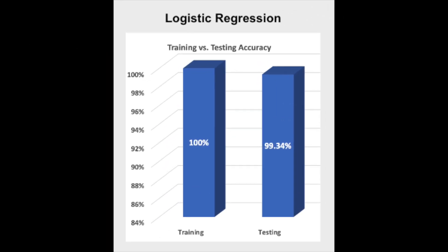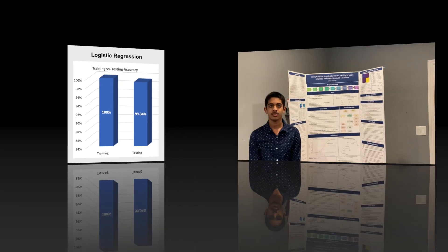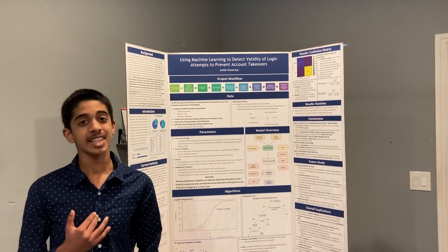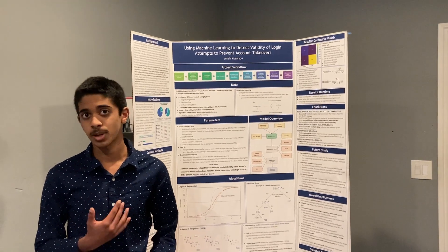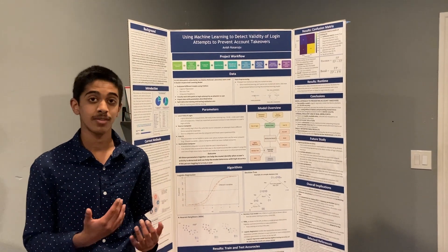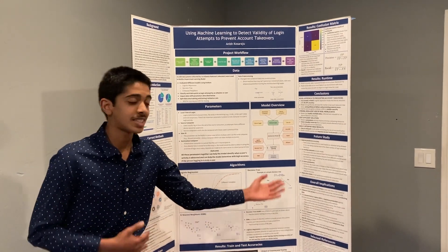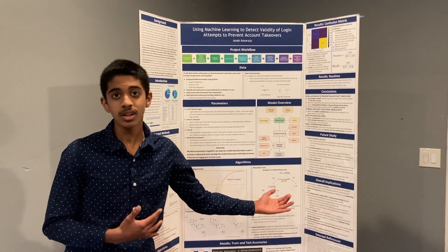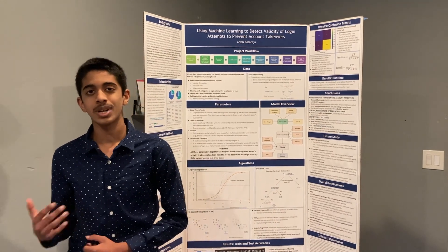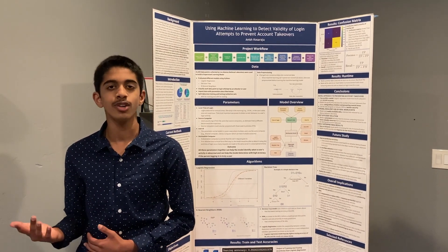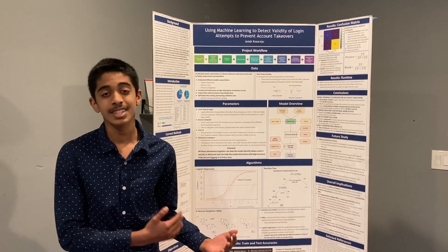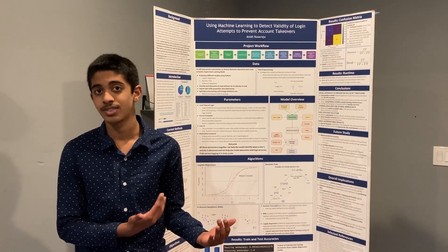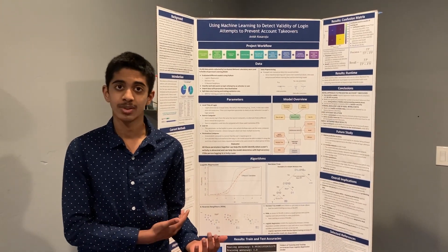The logistic regression model proved to be the most accurate, with a testing accuracy of 99.34%. I'm excited about the potential of my project, which has several benefits, such as saving billions of dollars each year, preventing stress that victims would experience from account takeovers, and saving resources that a company would otherwise have to use to deal with account takeovers.